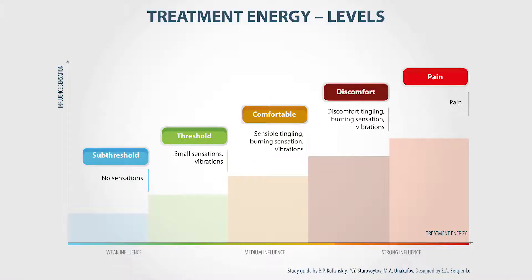The treatment energy can be assessed by the strength of the patient's sensations and subjectively divided into several levels. The first level is the sub-threshold level, which means total absence of any kind of sensations. The second is the threshold level, when the patient starts to feel small vibrations and tingling under the device electrode.